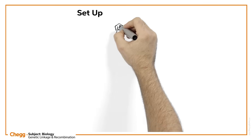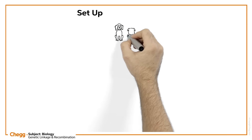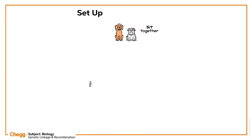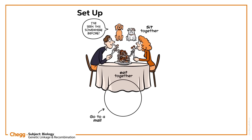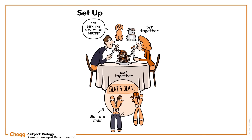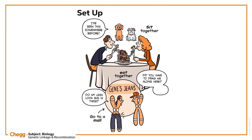All of us have close friends with whom we go out. We sit together, eat together, or go to a mall. Similarly, genes also tend to move along with the genes that are adjacent to them while they are inherited. We call this genetic linkage.